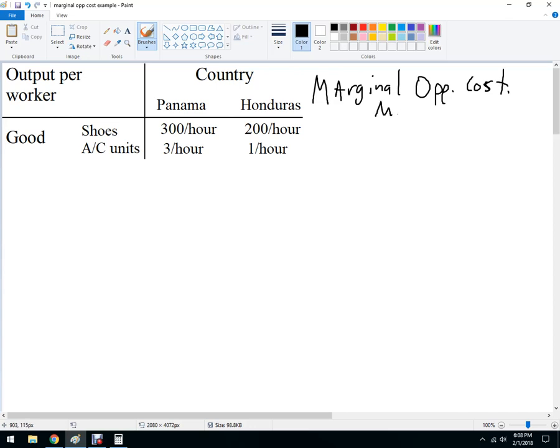The reason that we calculate the marginal opportunity cost is to figure out who has the comparative advantage. Remember, comparative advantage says that tasks should be done by whoever has the lowest opportunity cost.